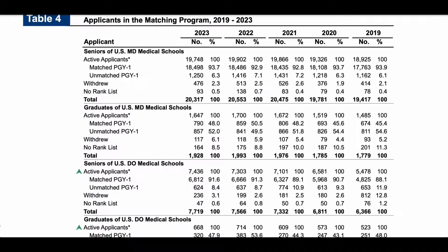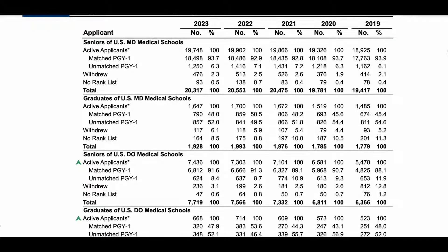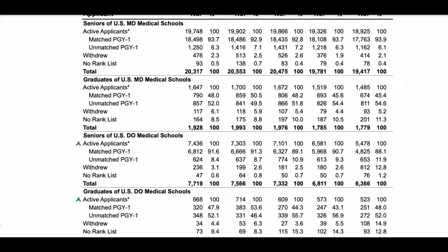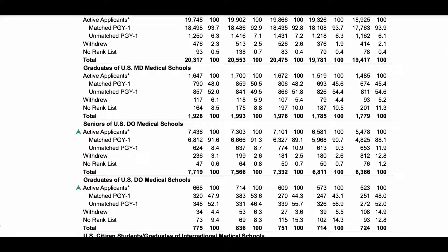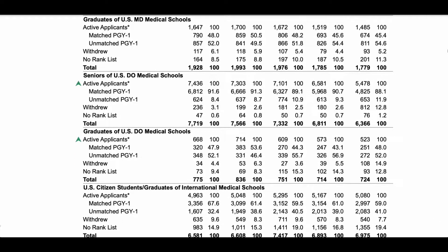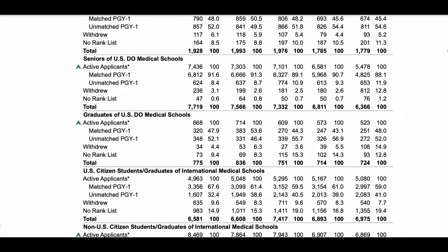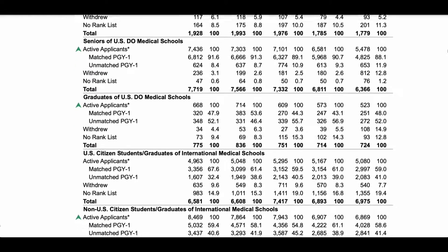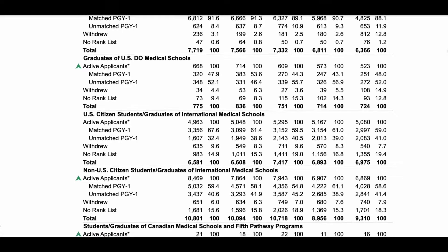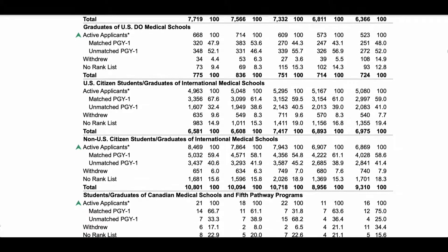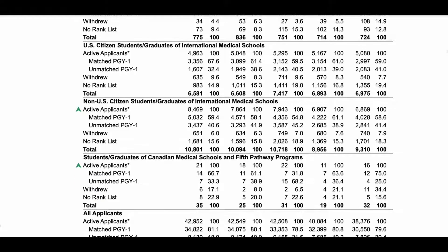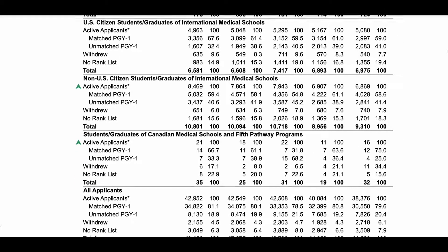First, you need to know your status. Chances are you're either enrolled in or graduated from a medical school outside of Canada and the US. As such, you will be classified as an international medical graduate, also called IMG. There are two types of IMGs. The first category groups US citizens or permanent residency card holders enrolled in or graduating from a medical school outside of Canada and the US — these are your US IMGs.